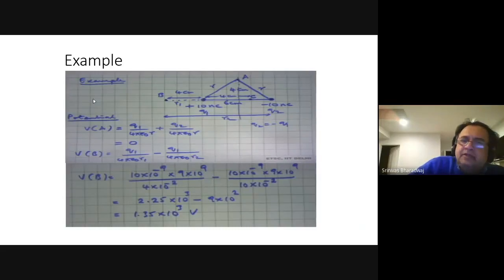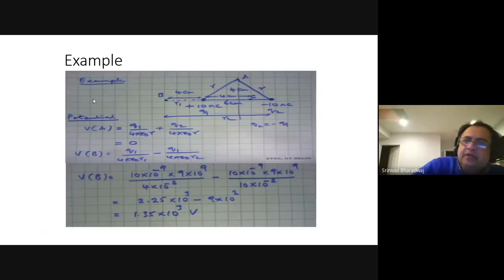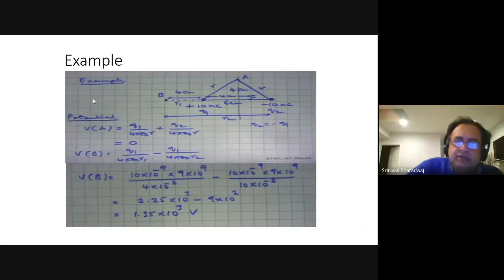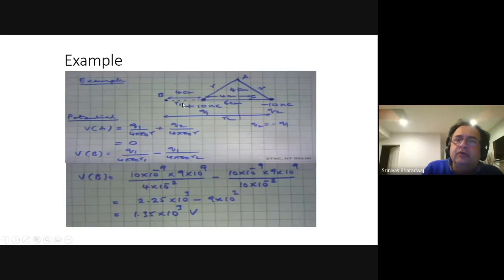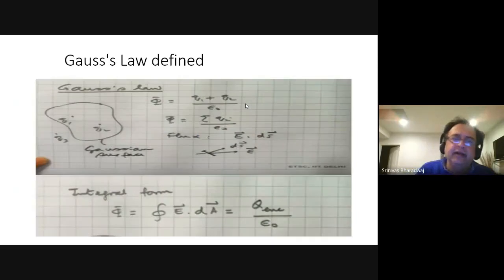Here is a simple problem: the potential due to a dipole with +10 nanocoulombs and −10 nanocoulombs. What is the potential at point A? It will be zero because the charges are equidistant. What about point B? Point B will have a positive potential because the distance to the positive charge is 4 cm and to the negative charge is 10 cm, giving Q/(4πε₀R) for each. Then we go back to Gauss's law.